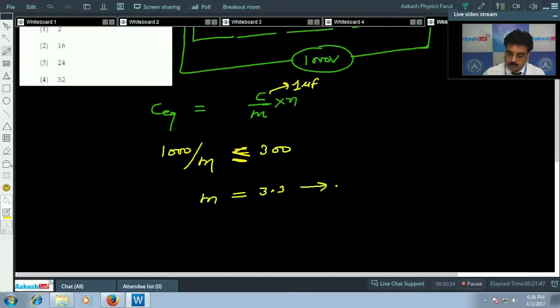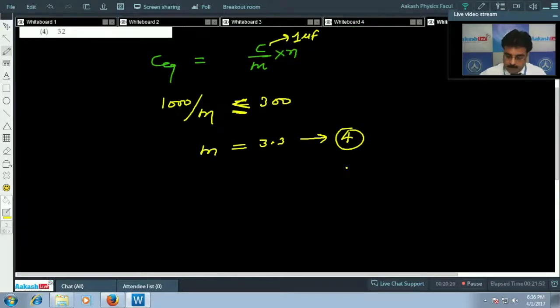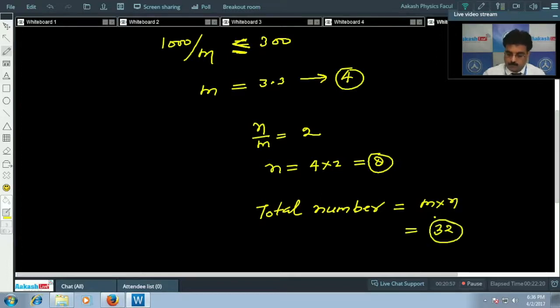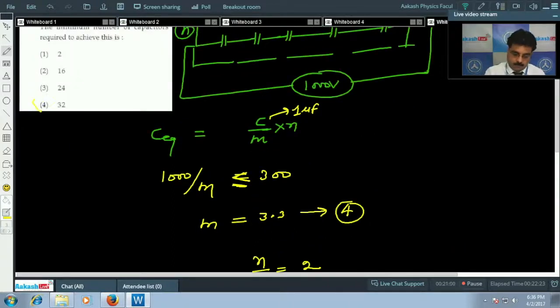Now if I use the relation n by m equals 2, then n equals 4 into 2, which equals 8. So the total number of required capacitors is m into n, which is 32. So my option is 4.